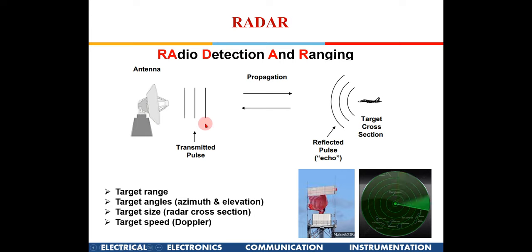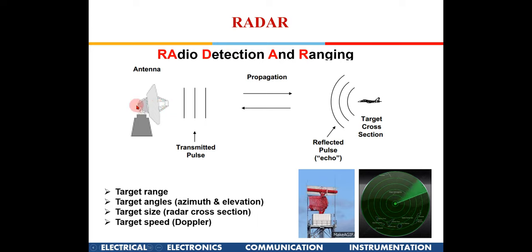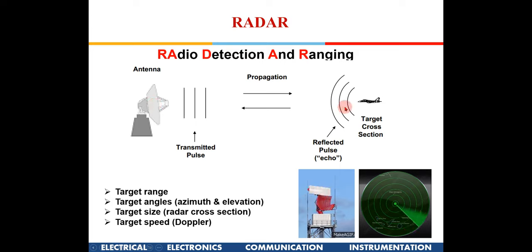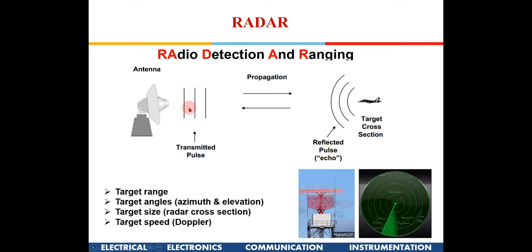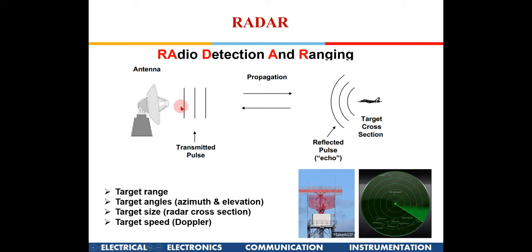If we can calculate the time taken from when the pulse is transmitted to when it returns after hitting the target, and since the electromagnetic pulse moves at the velocity of light, we can compute the distance. Time is known, velocity is known, so we can compute the range.